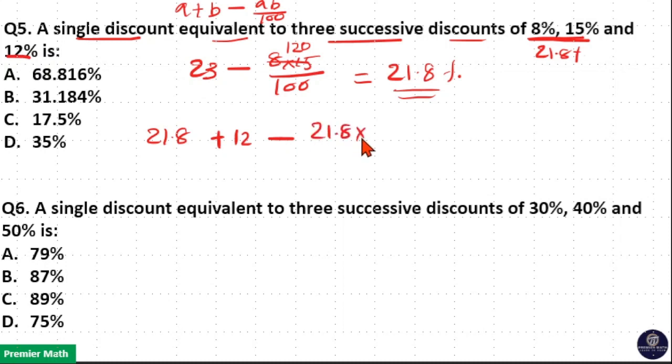Now here 12 goes 8 times in 100. 12 into 8 is 96 remaining 4. So 12 goes around 3 times.